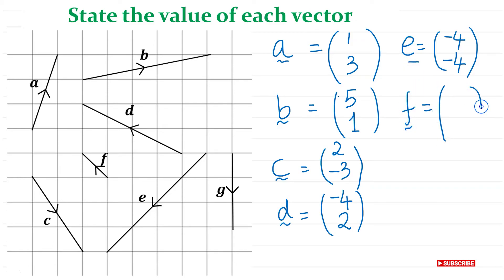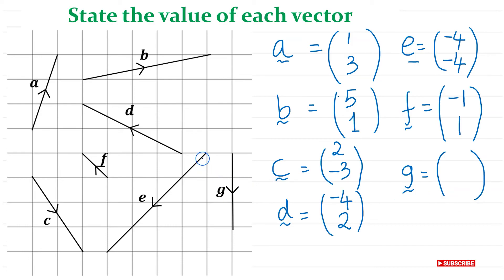Vector f went one left and one up, so that's (-1, 1). And the last one, vector g: it went straight down with no horizontal movement at all, so the x-component is zero and it went down three, giving (0, -3). Remember, these are vectors — you must not write them as fractions. You can't write three over two; that does not represent a vector.